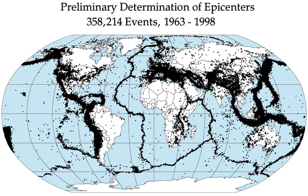An 8.6 magnitude earthquake releases the same amount of energy as 10,000 atomic bombs like those used in World War II. This is because the energy released in an earthquake, and thus its magnitude, is proportional to the area of the fault that ruptures and the stress drop. Therefore, the longer the length and the wider the width of the faulted area, the larger the resulting magnitude.